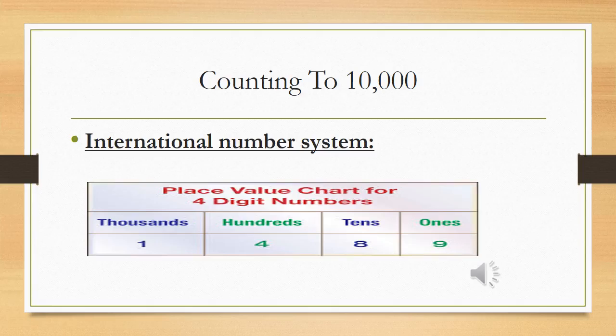There are two types of number systems. One is the international number system and the second is the local number system. If you are Pakistani, we use the Pakistani number system. If you are Indian or Australian, all have their local numbers as well, because their language and communication are also different. But the international number system is recognized throughout the whole world.